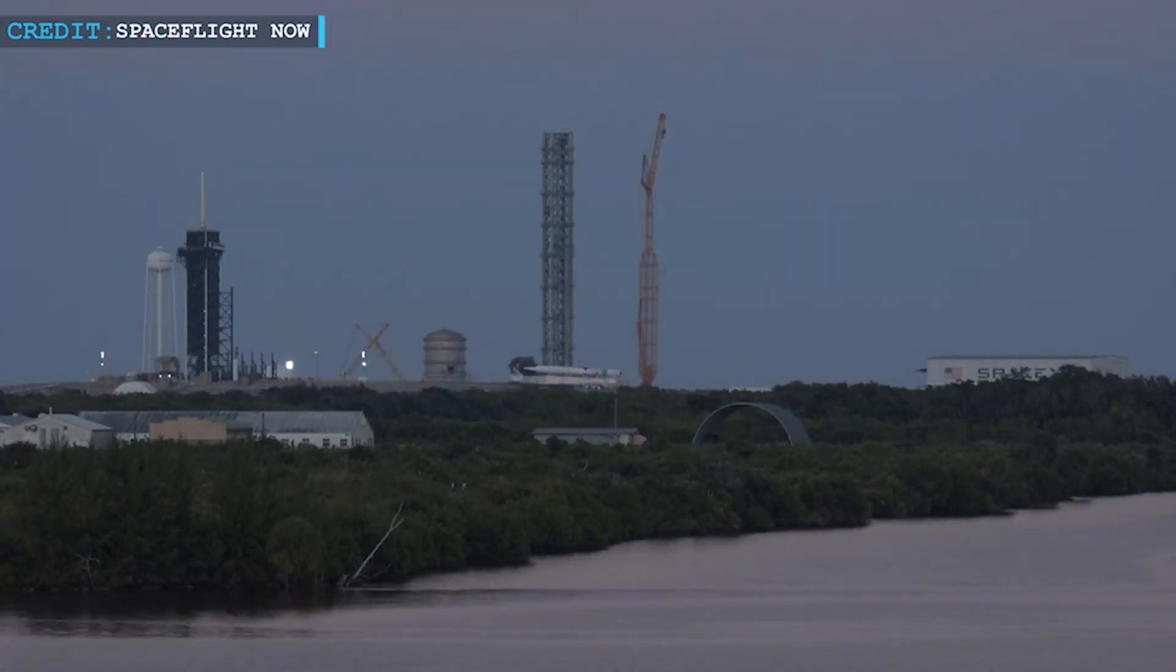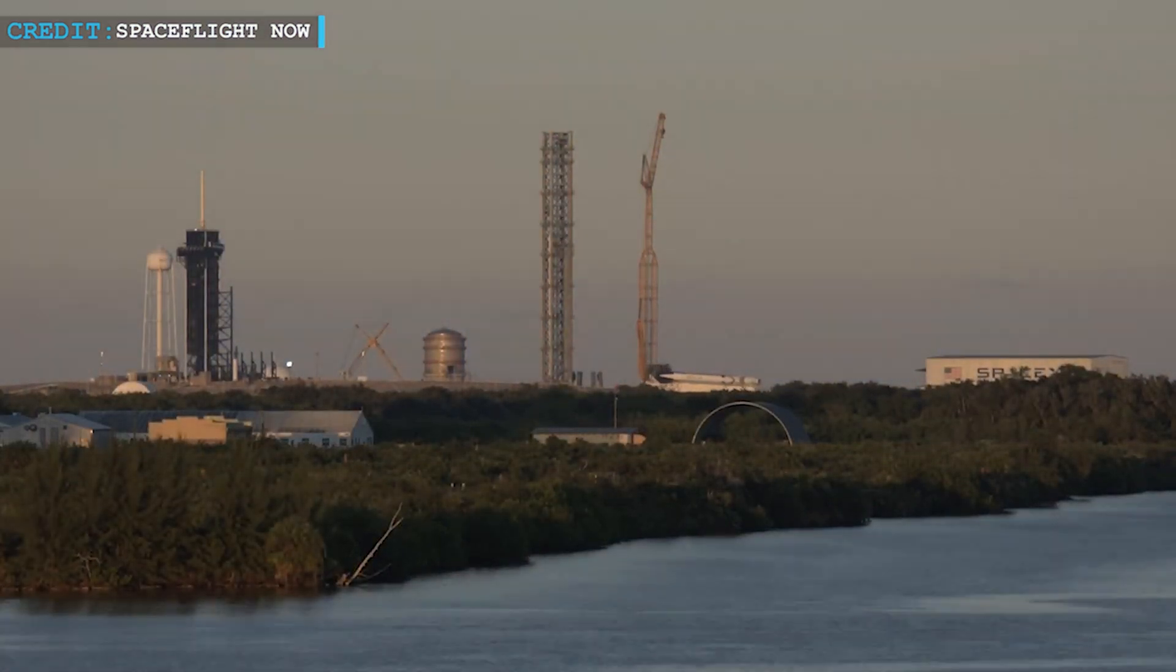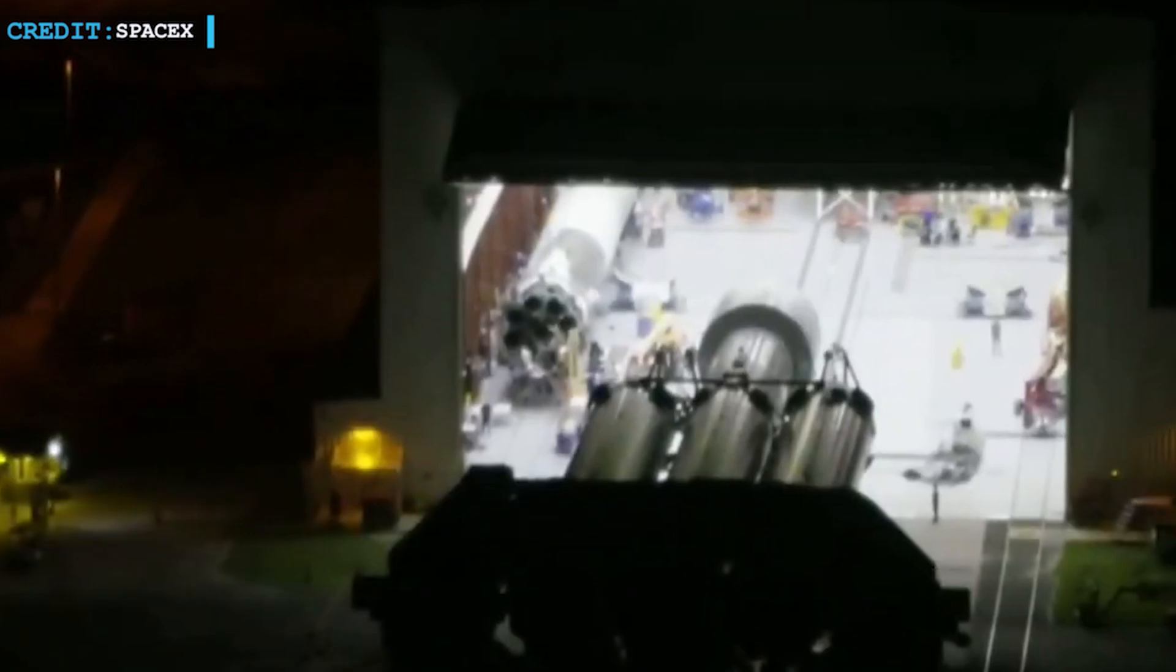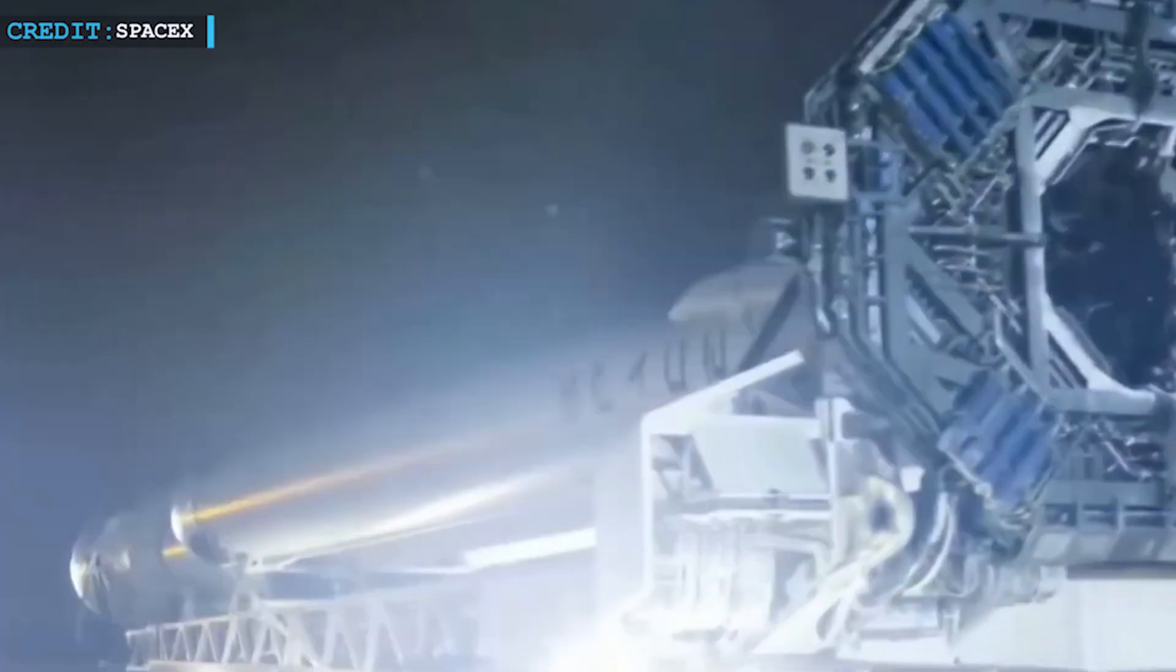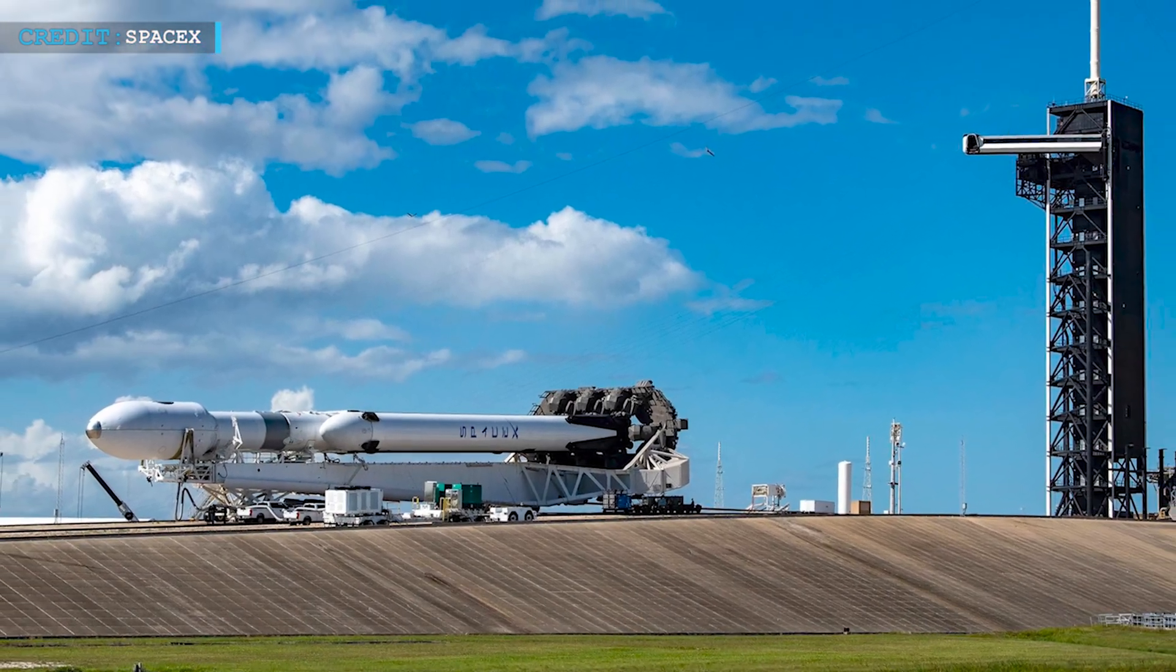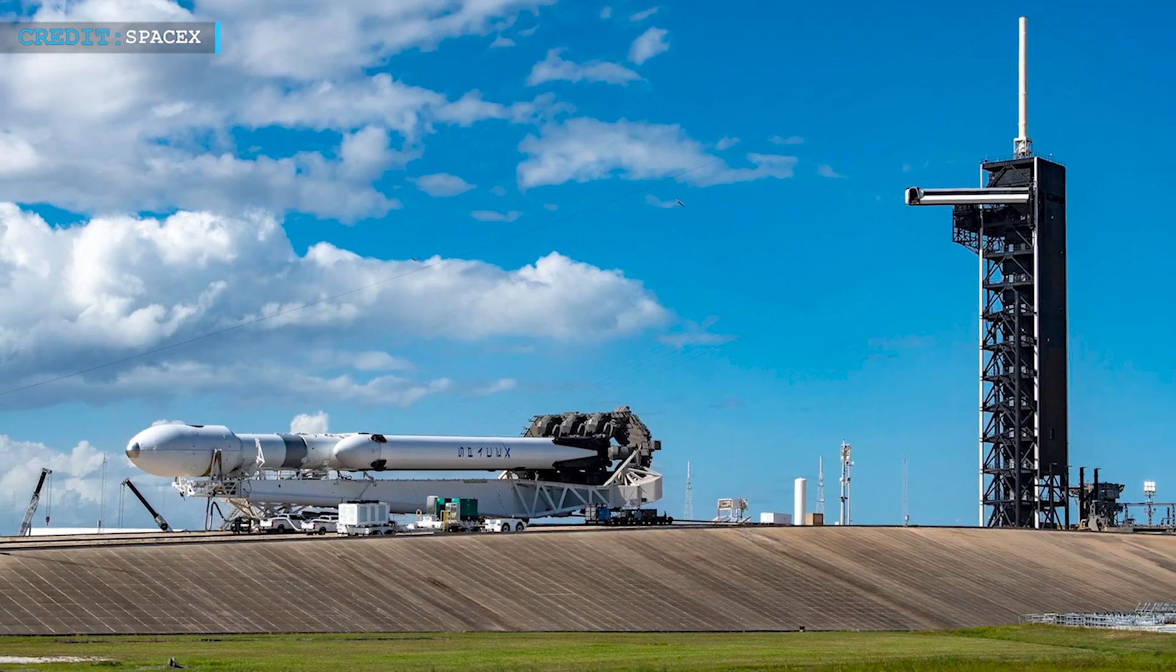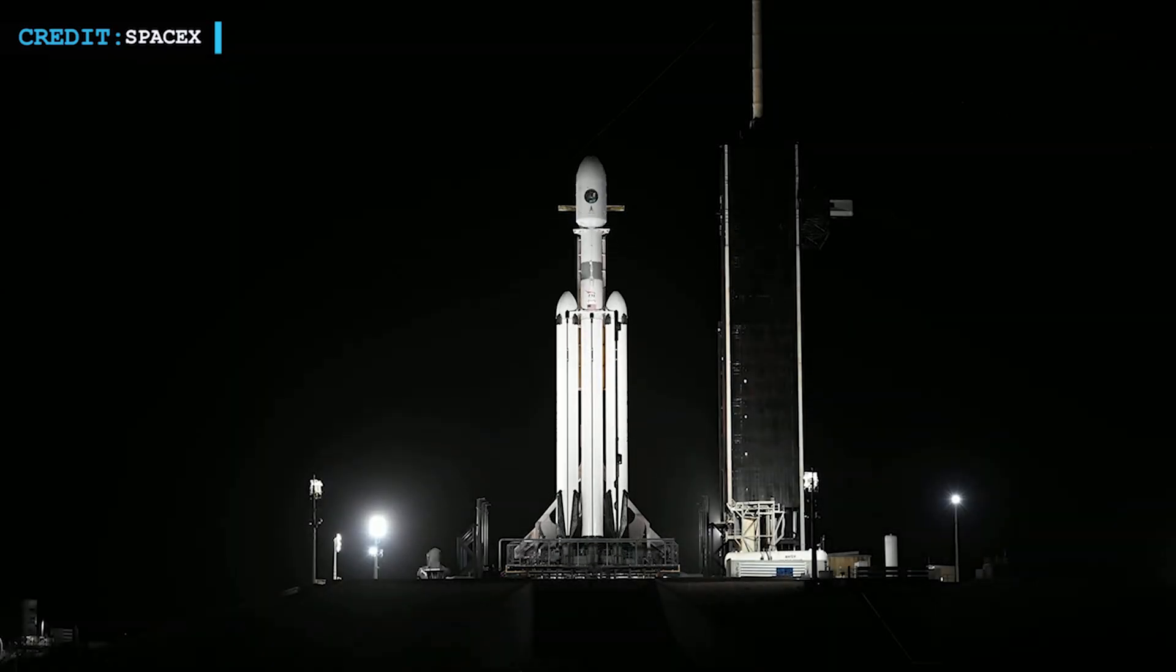Later, Falcon Heavy was again rolled back to Pad 39A's integration hangar on the 30th of October. Then the payloads for USSF-44 mission were enclosed in a payload fairing and were installed on the rocket. Reports say that on the 31st of October, SpaceX again rolled out the fully assembled Falcon Heavy, and finally on the pre-scheduled date and time they've gone for launch.